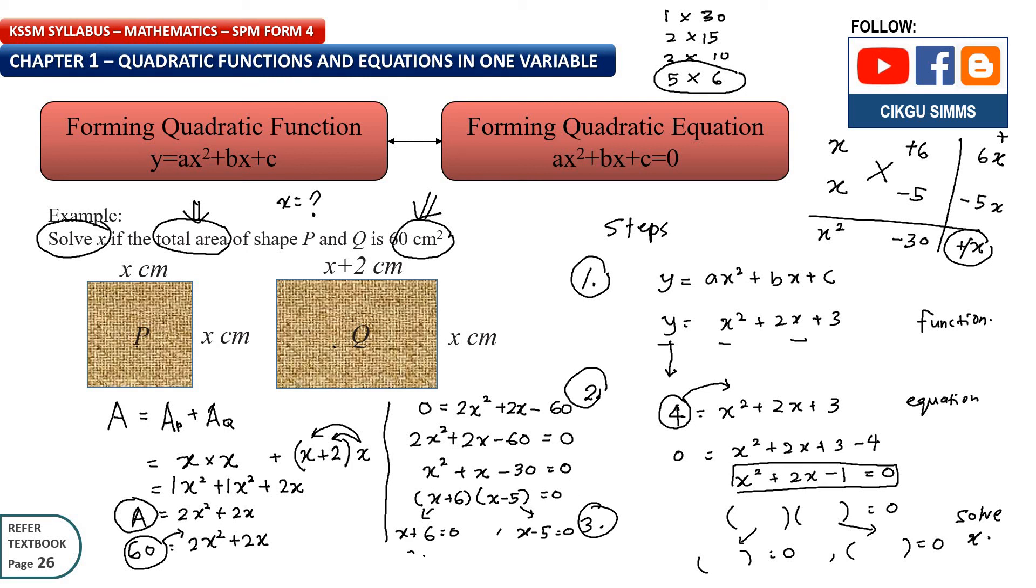And then x is minus 6, x is 5. So let's see. We have two answers, right? Two roots. Which is suitable? Which one is suitable? So can this length negative number? So no, right? This length is always positive. So this one is rejected. You can write rejected. So this one is the final answer. x is 5.